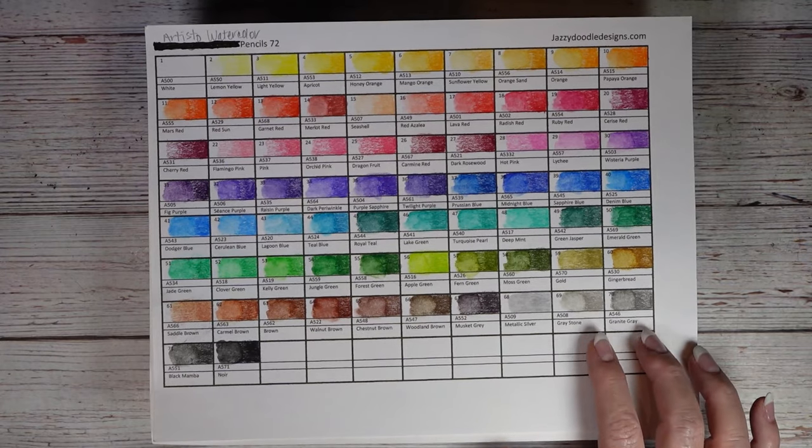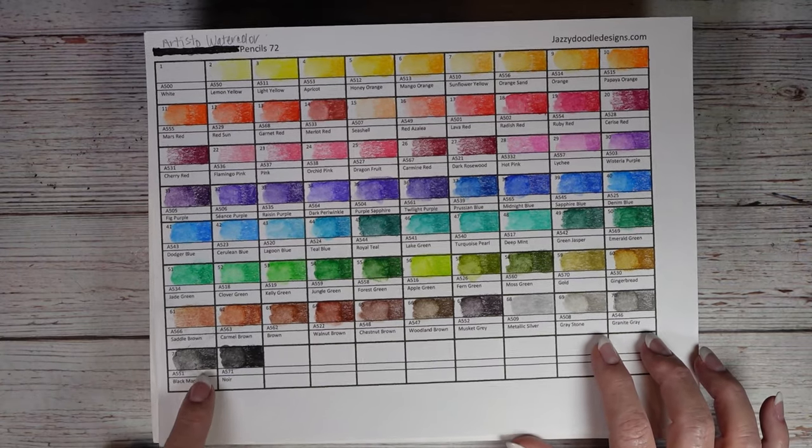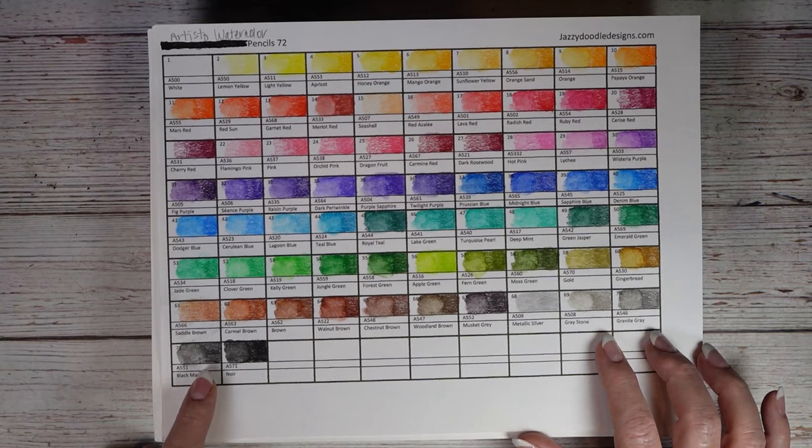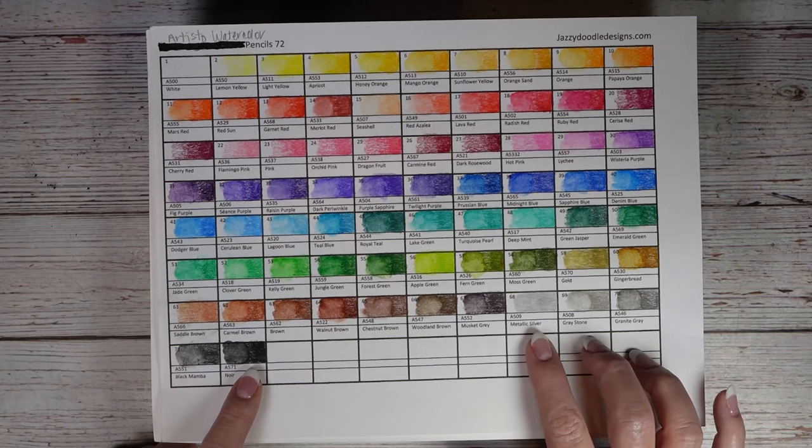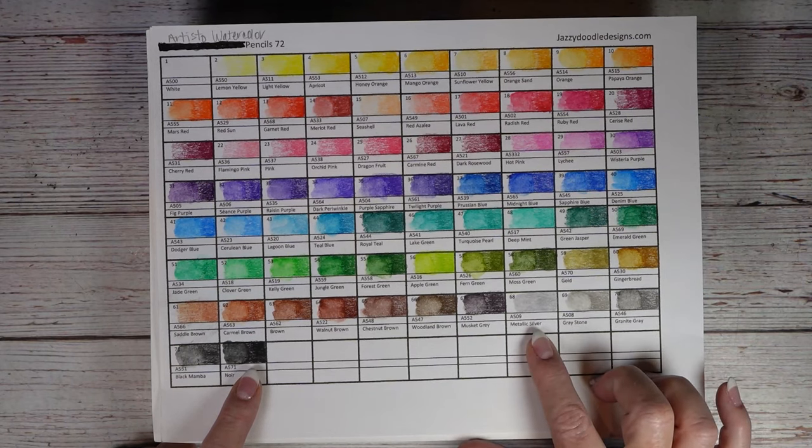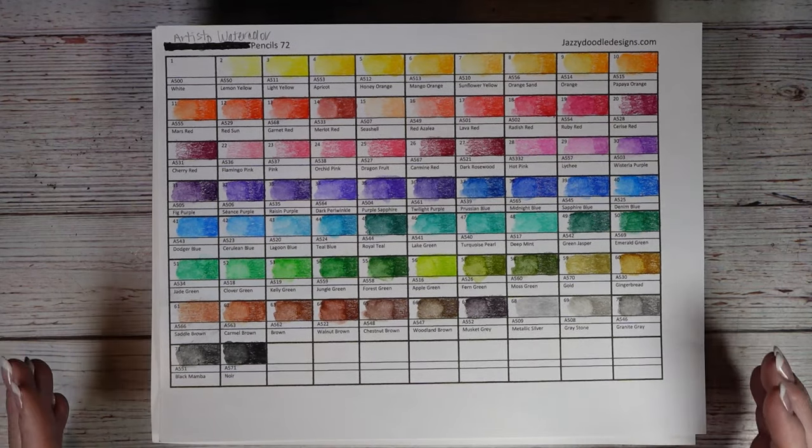You've got two what I would call warmer grays. This Black Mamba, which is just ever so slightly lighter than the black. And then a metallic silver. So not even really a cool gray.